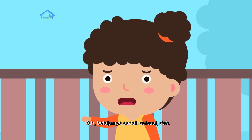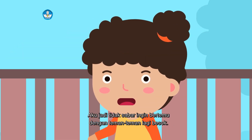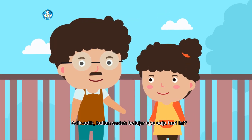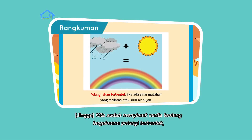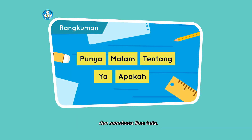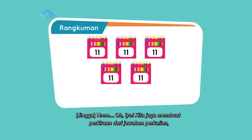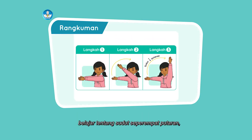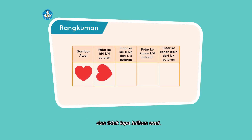Besok kita bertemu lagi dan aku akan menunjukkan bagaimana caranya mengubah bentuk pelangi yang kita buat. Kenapa bentuk pelangi yang kita buat bisa diubah-ubah? Bisa teman-teman, kalian tidak percaya? Saksikan saja acara ini lagi besok. Belajarnya sudah selesai deh, kan masih ada hari esok Jingga. Aku jadi tidak sabar ingin bertemu dengan teman-teman lagi besok. Adik-adik, kalian sudah belajar apa saja hari ini? Kita sudah menyimak cerita tentang bagaimana pelangi terbentuk, melakukan uji coba sederhana, membuat pelangi menggunakan barang-barang di rumah, dan membaca lima kata. Lalu apa lagi yang kalian pelajari hari ini? Kita juga membuat perkiraan dari jawaban perkalian, belajar tentang sudut seperempat putaran, menggunakan anggota tubuh untuk menentukan sudut seperempat putaran, dan tidak lupa latihan soal.